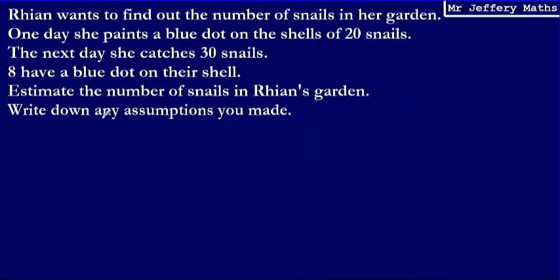Let's take a look at a second question. I'd recommend you pause the video, attempt the question, and then press play to see if you've got it right. We're told that Rhian wants to find out the number of snails in her garden. One day she paints a blue dot on the shells of 20 snails. The next day she catches 30 snails, eight of which have a blue dot on their shell. Estimate the number of snails in Rhian's garden and write down any assumptions that you've made.